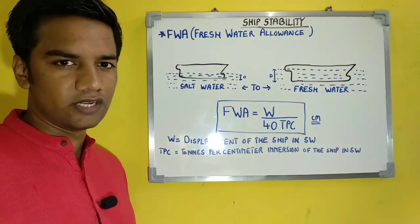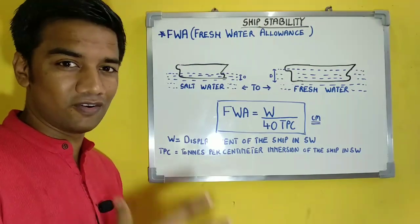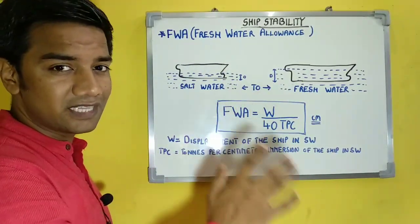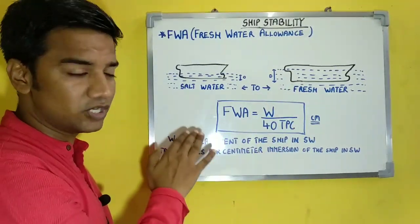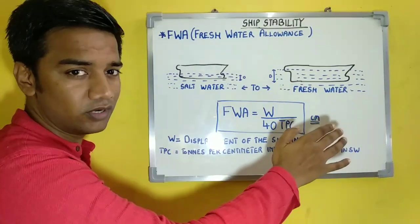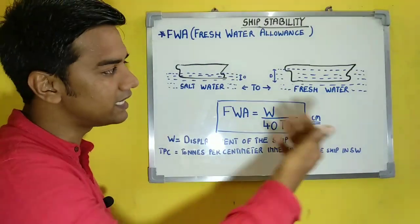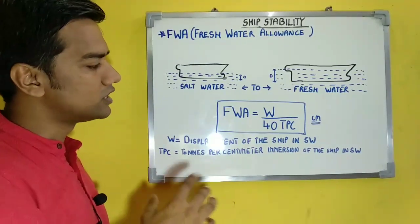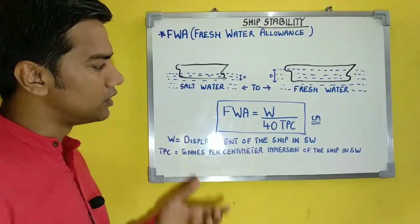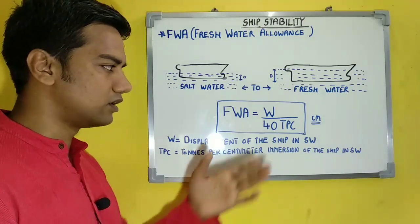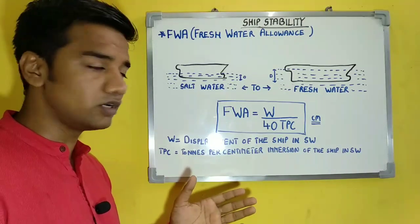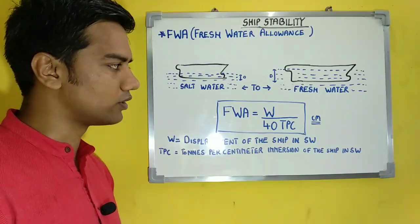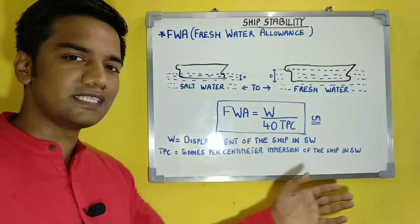Our next term is fresh water allowance. Fresh water allowance is the allowance made for fresh water when a ship goes from salt water to fresh water. It is the increase in draft when a ship goes from salt water to fresh water, or the decrease in draft when the ship comes from fresh water to salt water. The formula is: displacement W divided by 40 × TPC — that is displacement in salt water divided by 40 times the tonnes per centimeter immersion in salt water. The SI unit is centimeters.